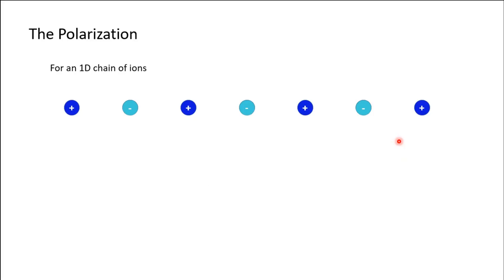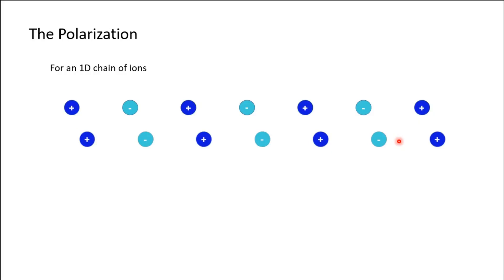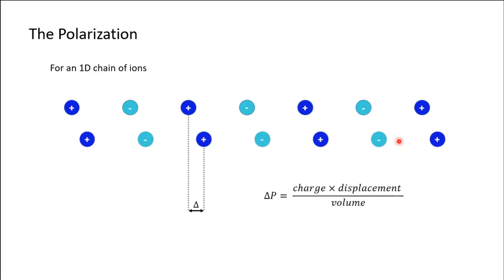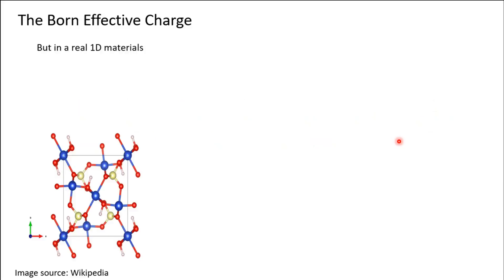To discuss polarization related to Born effective charge, let us consider a one-dimensional chain of ions where positive and negative ions are situated alternately. If there is some displacement of the ions — say displacement delta — then the polarization is defined as charge multiplied by displacement, that is the dipole moment, divided by volume. This is the polarization in the ideal case, where the charge is one electronic charge.